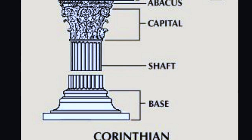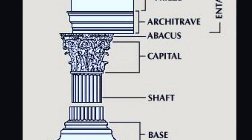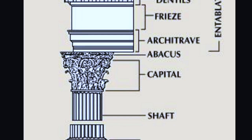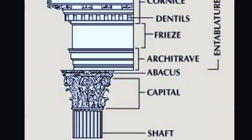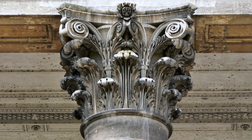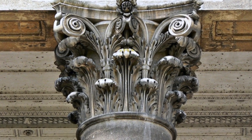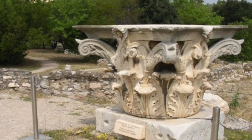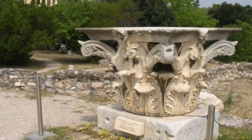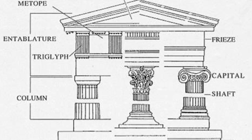The third order was the Corinthian order. This style was more seldom used in the Greek world, but often seen in Roman temples. This order is by far the tallest, most elegant, and most majestic in appearance. The columns are topped by foliated capitals that are delineated by acanthus leaf carvings.